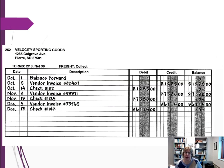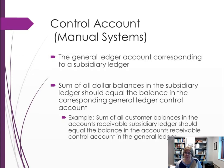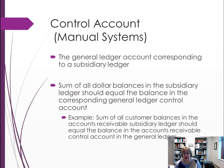Here's an example of an accounts payable subsidiary ledger for Velocity Sports — you can see an invoice received, then a check issued, resulting in a current balance of zero. When a subsidiary ledger exists, there must be a corresponding control account in the general ledger. For example, accounts payable has a control account in the general ledger, and the sum of all individual balances in the subsidiary ledger must equal the total in the control account.